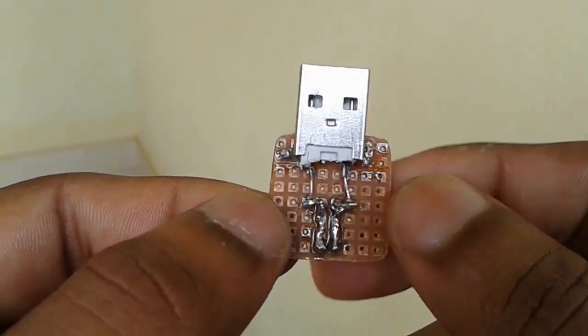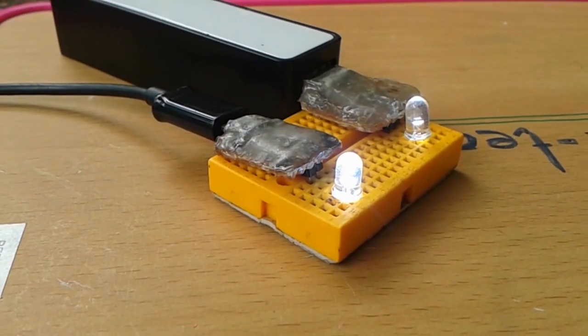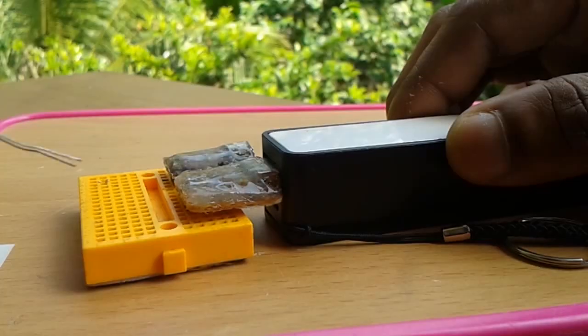Now give out the connections to the headers from the USB pins like this, and your DIY breadboard power supply is ready for use. Now apply the hot glue over the top of the board to give it a finished look.